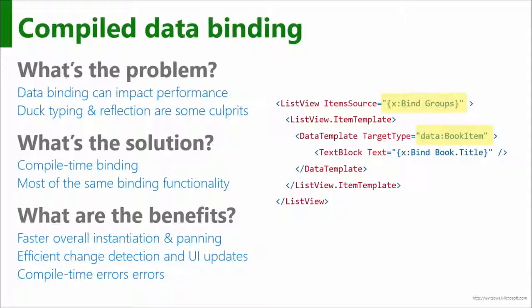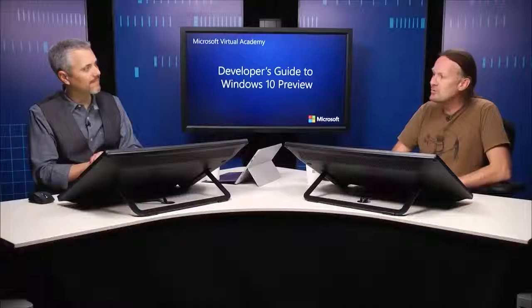We also have something new around binding. We know how powerful binding can be, but it's a double-edged sword — it can also be very painful for performance, especially if you have a lot of it. Data binding is a key ingredient for a nice architecture with good separation between your views, view models, logic, and data. But if you have a complex page with a lot of data-bound items, you can struggle with performance, which is why we've got compiled data binding to remove a lot of the runtime reflection and the slow overhead that was happening before.